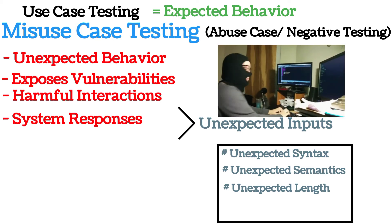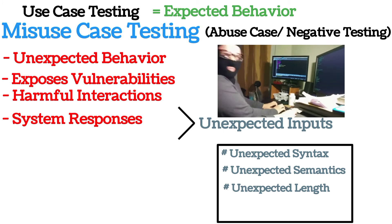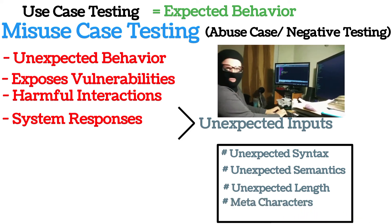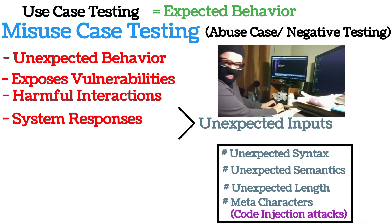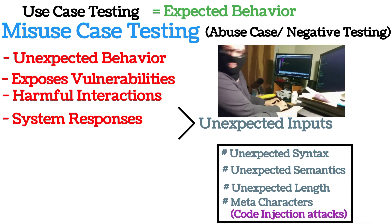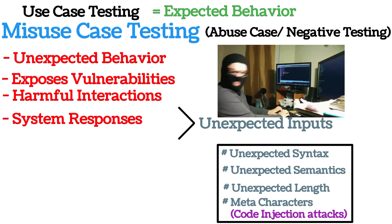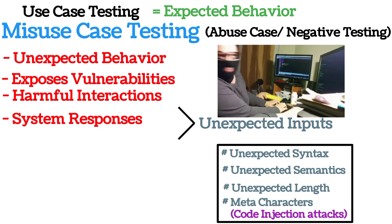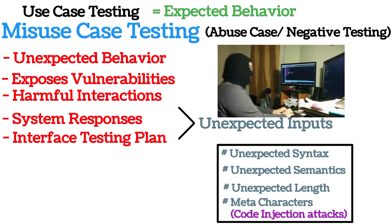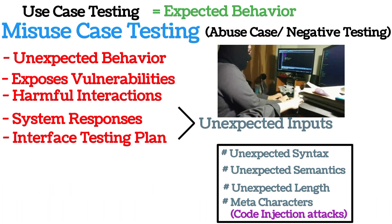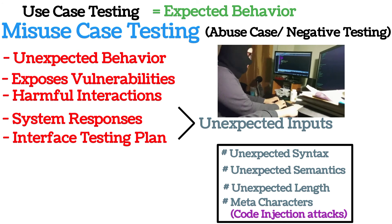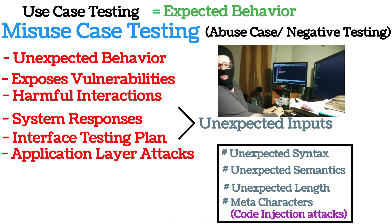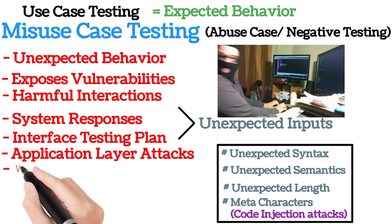Other unexpected inputs include an input with unexpected length — for example, inputting hundreds of alphabets or leaving a field totally blank — or using meta characters of a system programming language to input malicious code. System or application behavior is assessed against all such unexpected inputs. Misuse case testing must be part of your test plan, particularly the interface testing plan, and it primarily tests system vulnerabilities against Layer 7 application attacks.